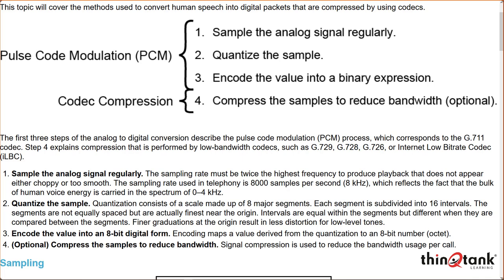What is quantization error? It's basically a rounding error — not only the gaps between the samples, because we're only doing 8,000 samples per second, but also the gaps on the steps and the segments as we're trying to represent each one of those samples in some sort of digital format. We sample from 0 to 4 kilohertz.